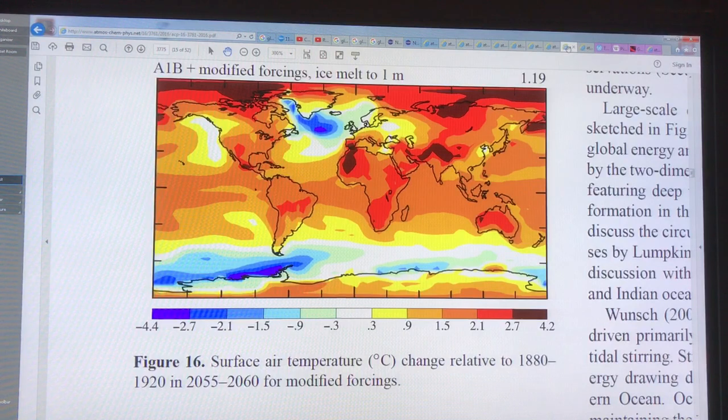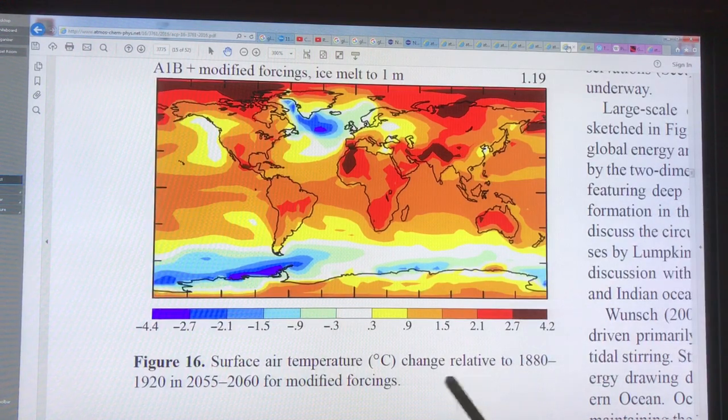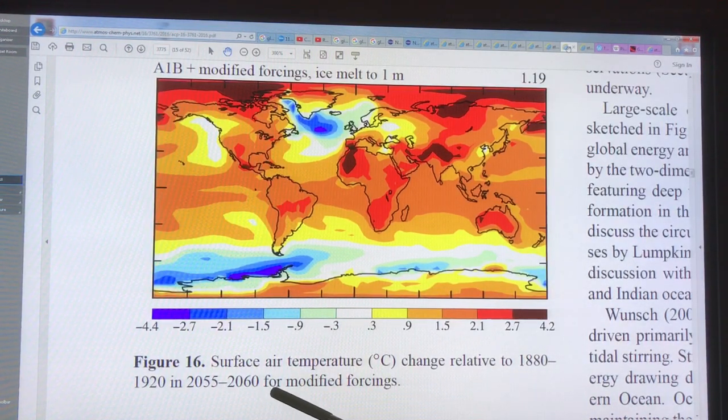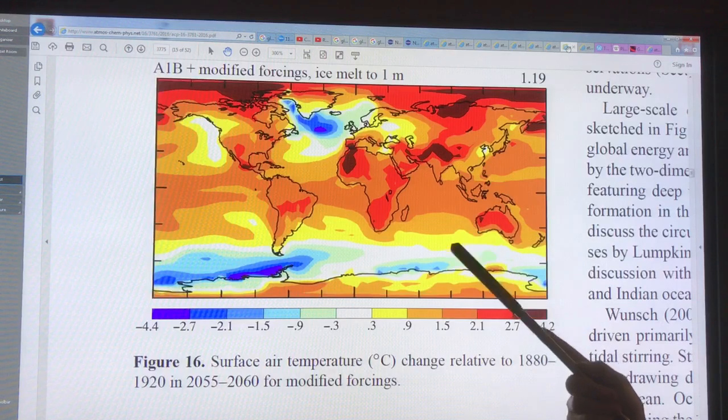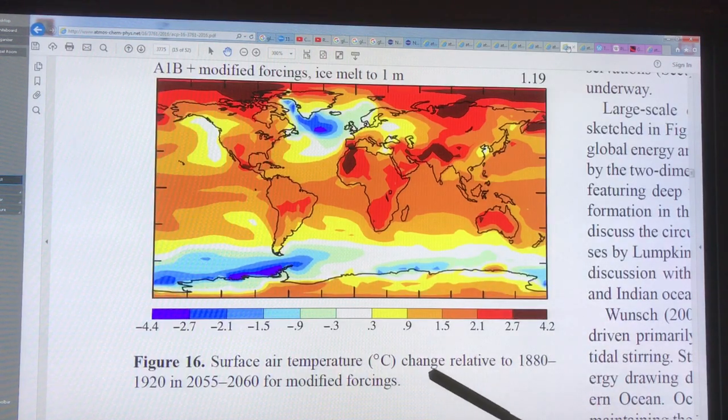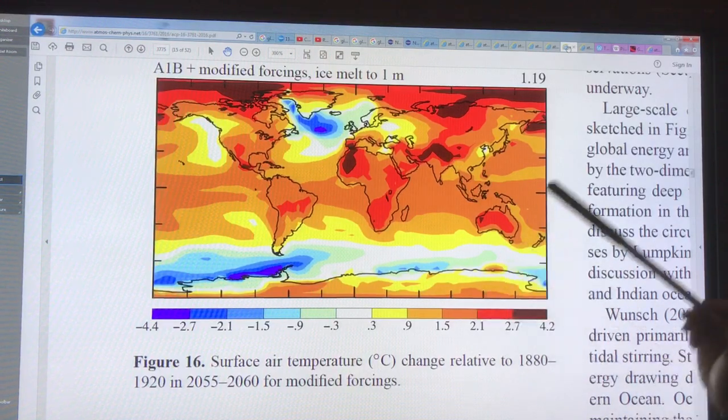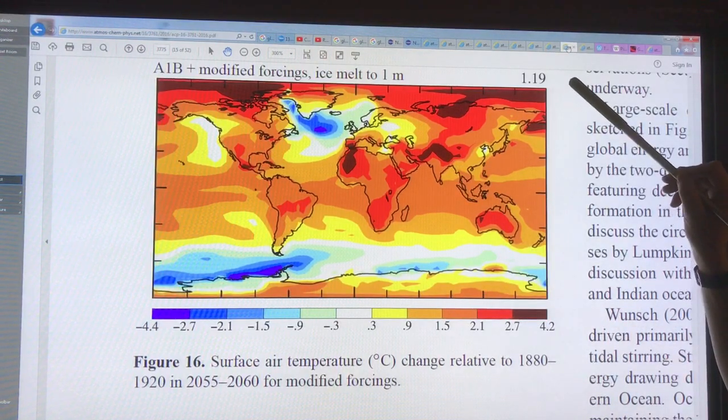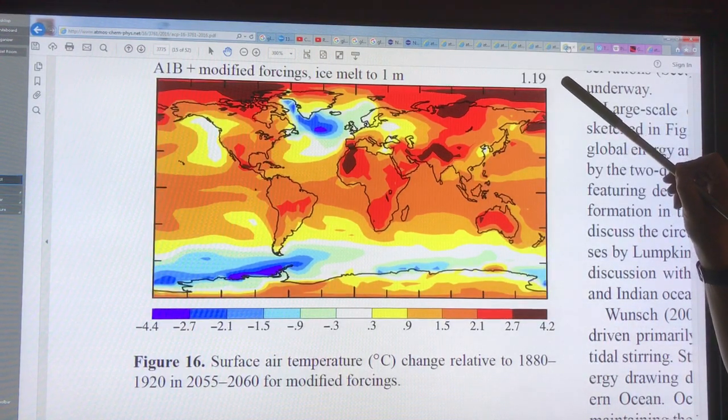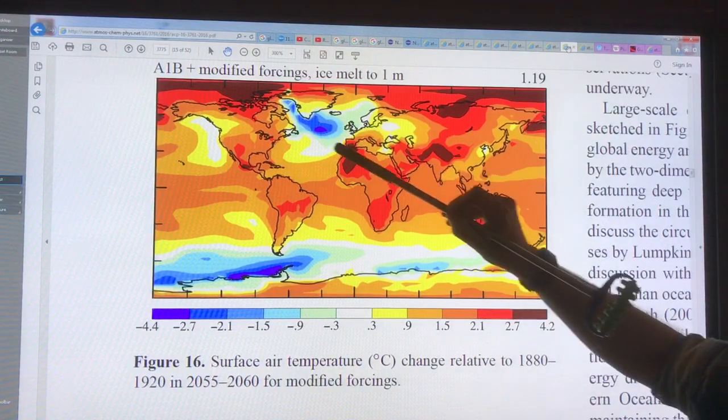This is showing surface air temperature on the planet relative to the 1880 to 1920 average in 2055 to 2060 with modified forcings. If there was a sea level rise of 1 meter then we would see global average temperature rising 1.19 degrees C, and there's this cold area here and this cold area here due to the extra ice melt.